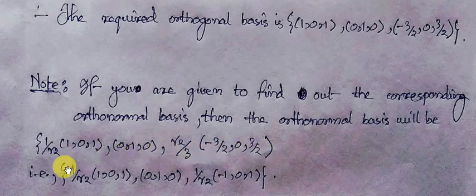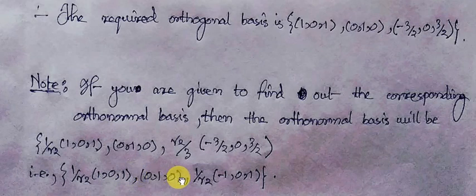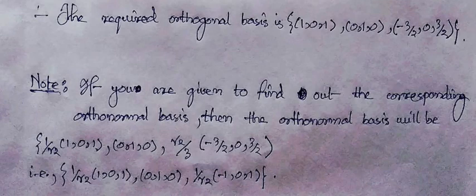The orthonormal vectors are (1/root 2) times [1, 0, 1] and (1/root 2) times [-1, 0, 1].